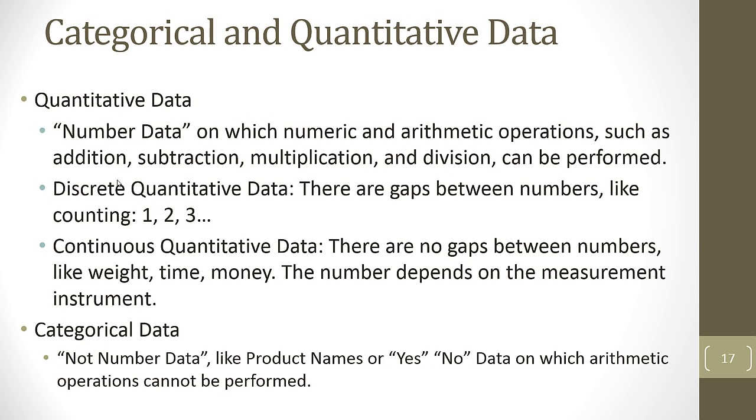For charting, quantitative, often if we have continuous quantitative data, the chart we would use is a histogram. That's column chart with no gap width. Whereas for categorical data we need to visually indicate that it's categorical by using a column chart with gap width. Within quantitative there's discrete, that's counting one, two, three, and then continuous quantitative data. That means there's no gaps between numbers like weight, time, and money. And the actual number depends on the measurement instrument. For continuous quantitative data, if we want to visually portray frequency we're going to use a histogram. But if we have discrete, there's actual gaps, so we will use a column chart with gaps. So terminology, very important.